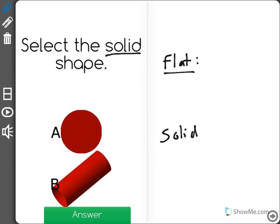What makes the difference between a flat shape and a solid shape? You could think of a flat shape as something flat like a piece of paper, and a solid shape is something you can hold with your hands.